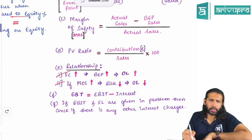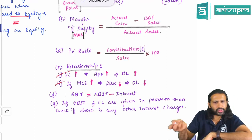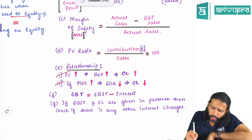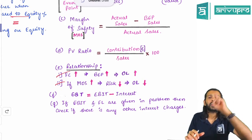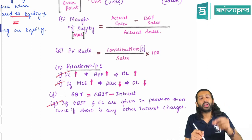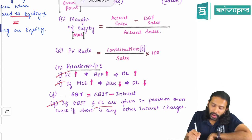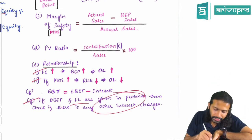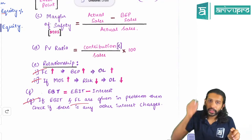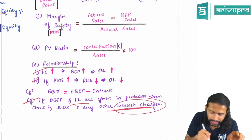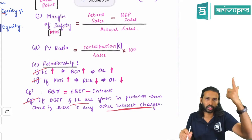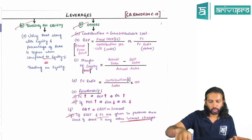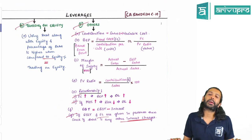EBT can be expressed as EBIT minus interest — relevant for problem-solving. When financial leverage and interest are given, you can substitute to find EBIT. A key problem-specific adjustment: whenever financial leverage and EBIT are given together, always recalculate EBT to check for any hidden interest charges. This was observed in one of the RTP problems. With this, the chart revision of this topic is complete.